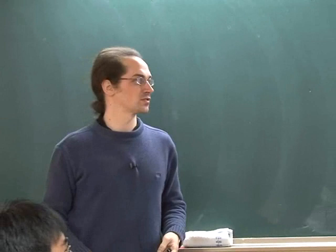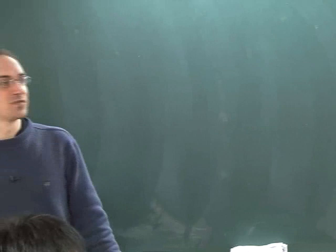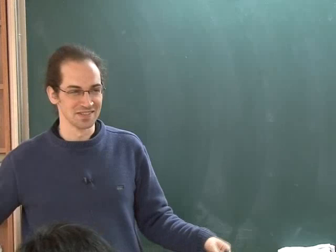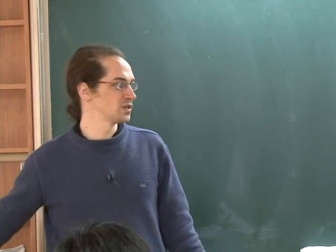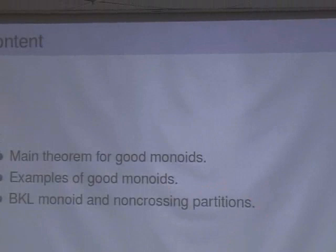I will define these terms as the talk goes along. It will be a mix between combinatorics and algebra. I will define this class of monoids I will call good monoids, which is not a standard term, but will be easy to remember. I will give some examples of these good monoids. The main one I will study in the second part of the talk will be the Birman-Ko-Lee monoid, which is related to the famous combinatorial objects that are non-crossing partitions.